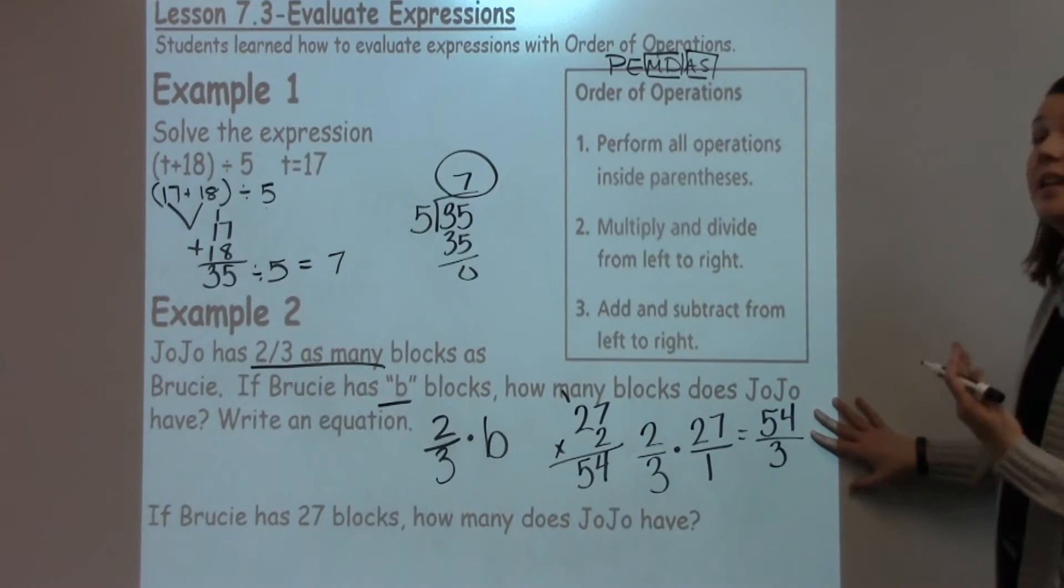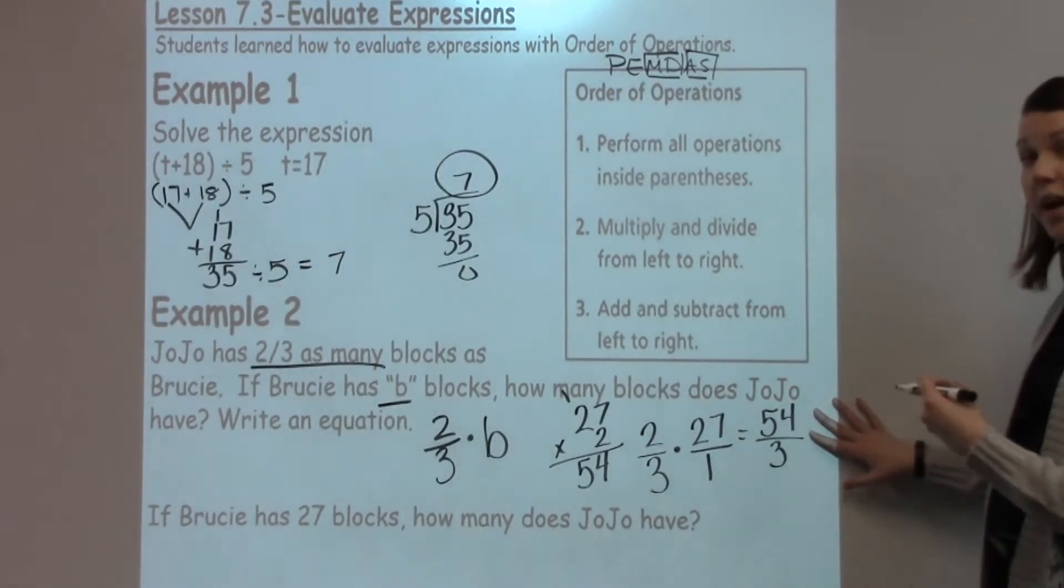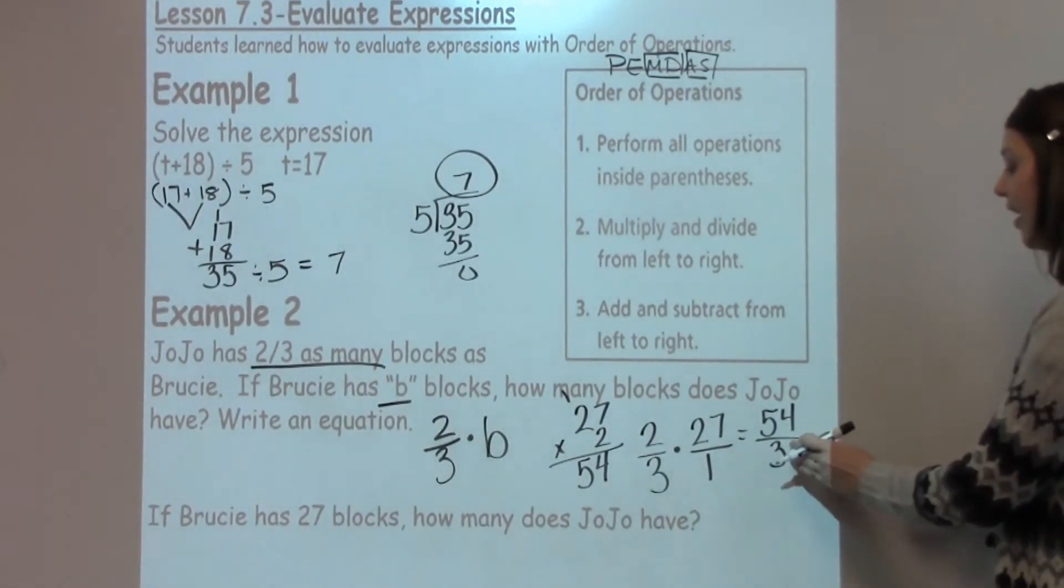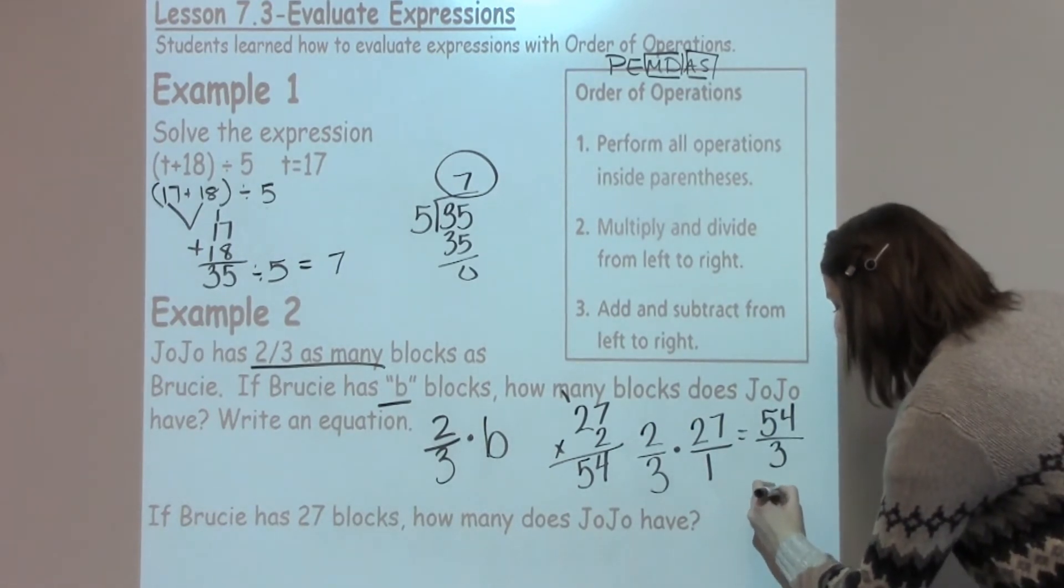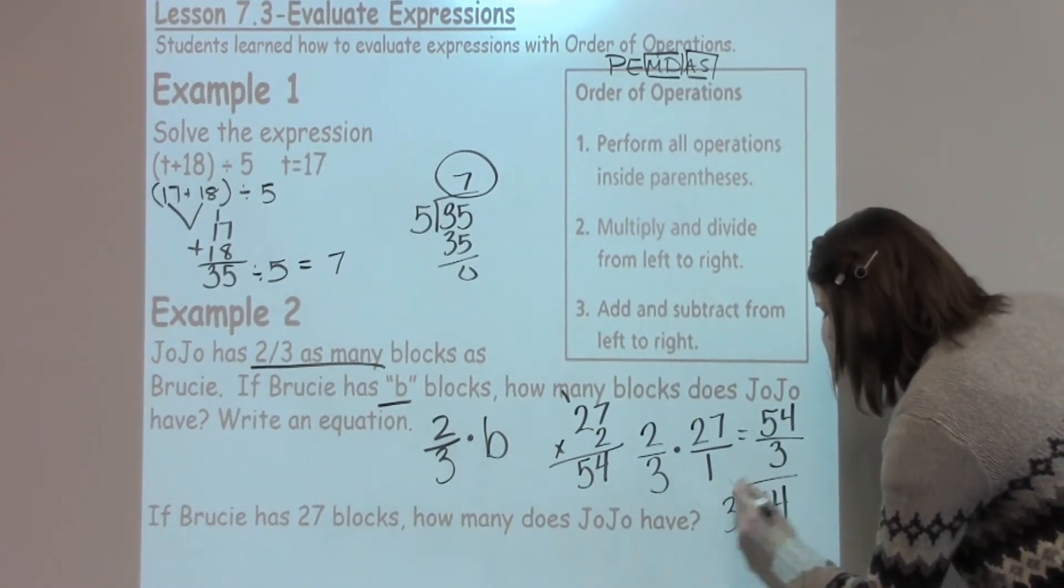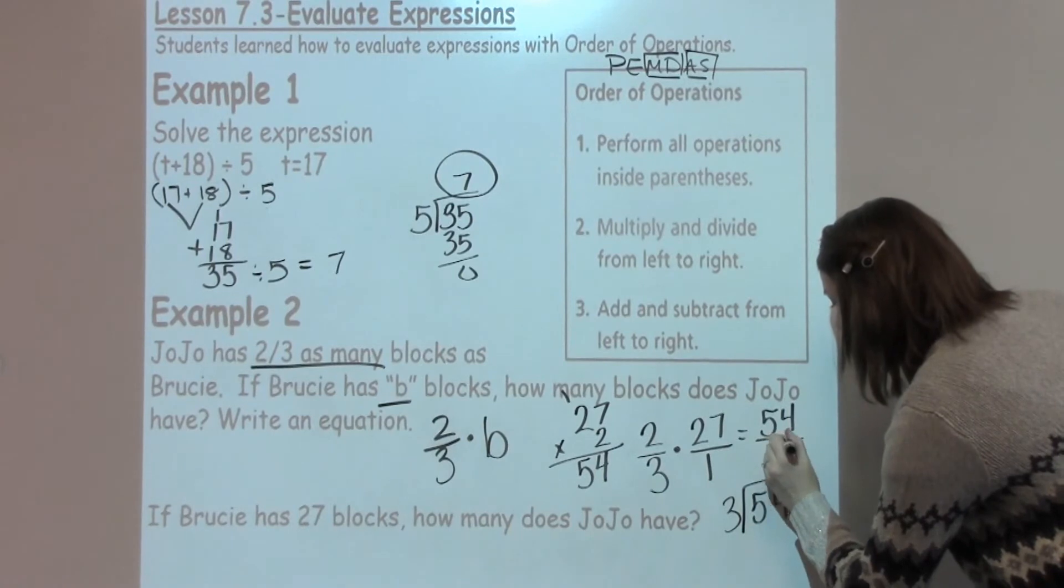A lot of students will recognize this as an improper fraction, which means we need to go ahead and divide. 54 divided by 3. When I go ahead and solve this, 54 divided by 3, I'm going to go ahead and erase that a little bit, make it a little bit smaller.